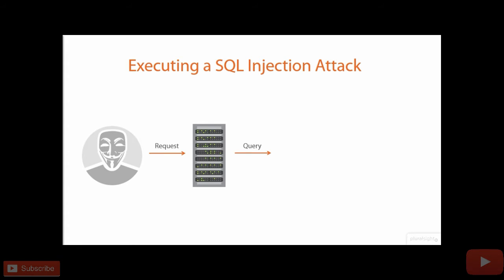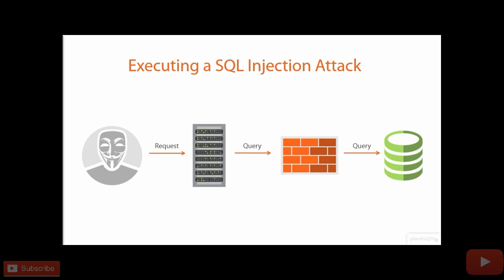Now very often there will be a firewall sitting somewhere between that web application and the database. But in a SQL injection attack, it is still the web application talking to the database — the attack is not going direct to the database. And this is one of the things that makes the attacks so successful, because it's still just the website and database talking. So the query goes through the firewall and all the way down to the database.